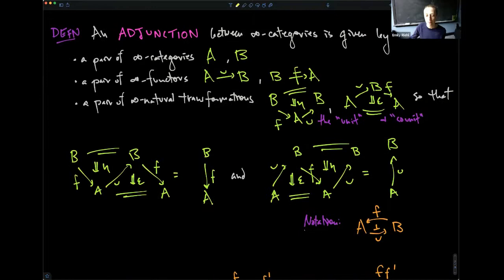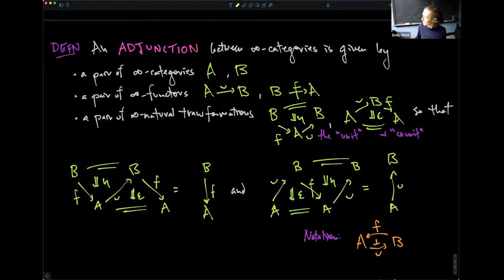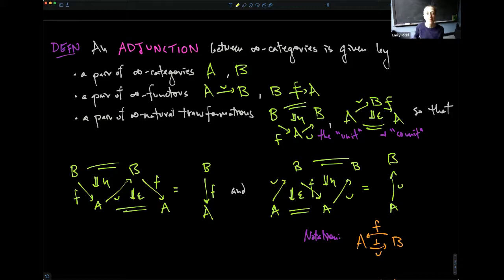Our aim is to develop the theory of infinity categories, and we start with the notion of an adjunction between infinity categories. This is a useful place to start because there is a definition of adjunction we can take off the shelf: because infinity categories are objects in a two-category of infinity categories, infinity functors, and infinity natural transformations, there is a standard definition of adjunction that one can define in any two-category.